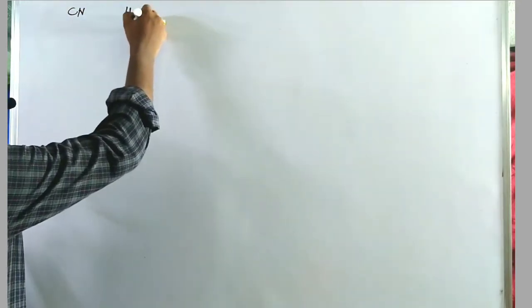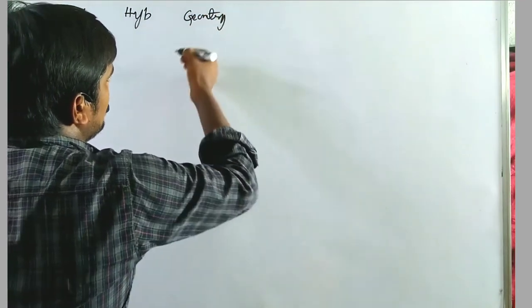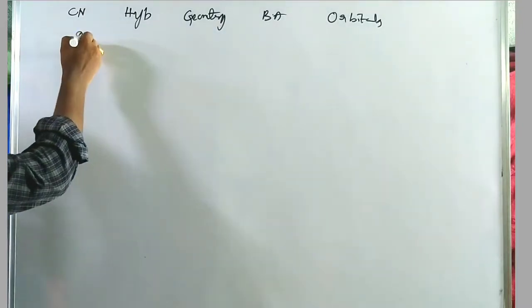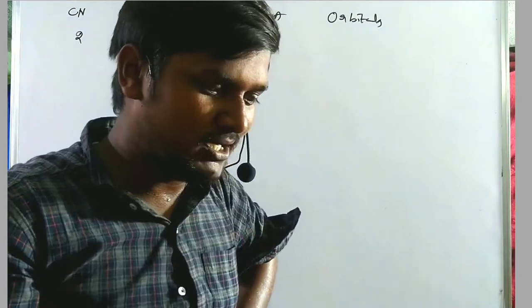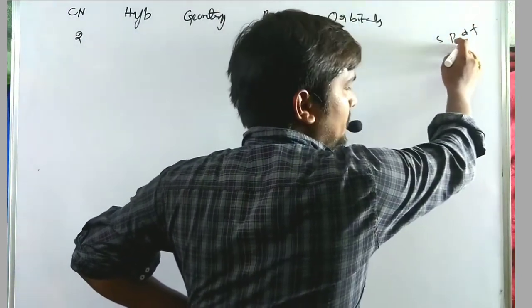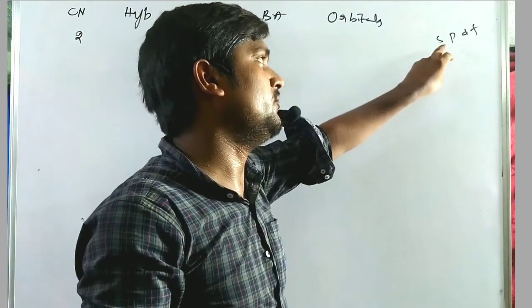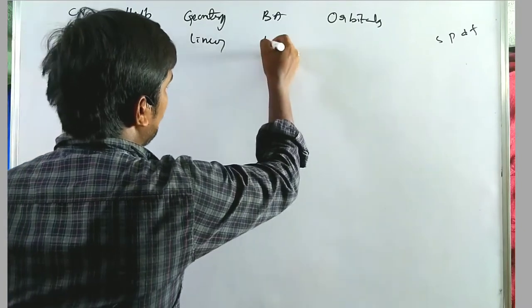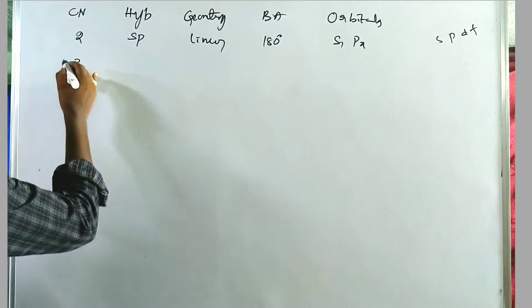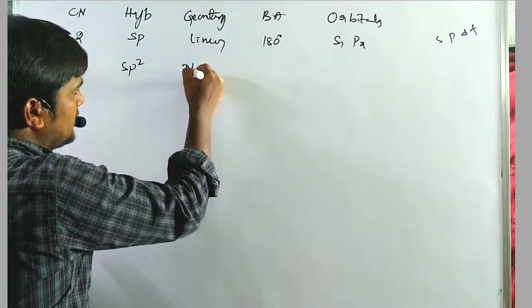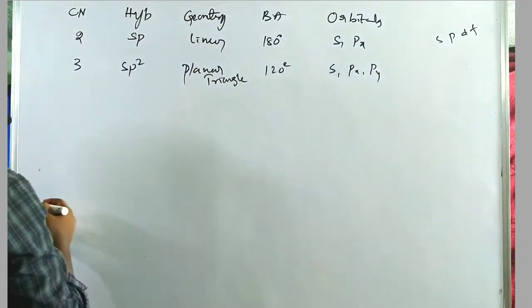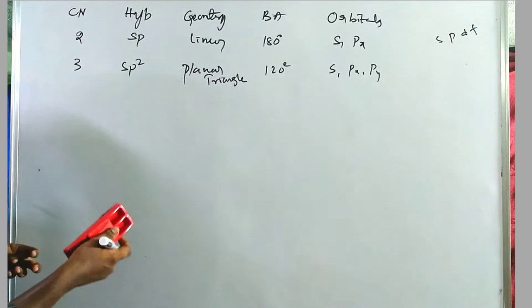Now, a table for hybridization: coordination number 2 uses one s and one p orbital → sp hybridization, linear geometry, bond angle 180°, orbitals: s, px. Coordination number 3 → sp² hybridization, triangular planar geometry, bond angle 120°, orbitals: s, px, py. Coordination number 4 has two types: sp³ (tetrahedral, 109°28', orbitals s, px, py, pz) and sd³ (also tetrahedral, orbitals s, dxy, dyz, dzx).